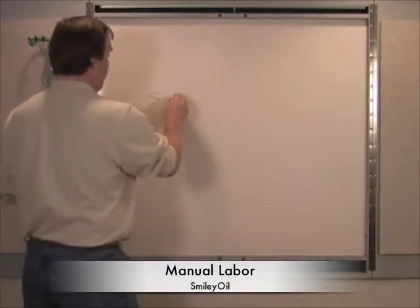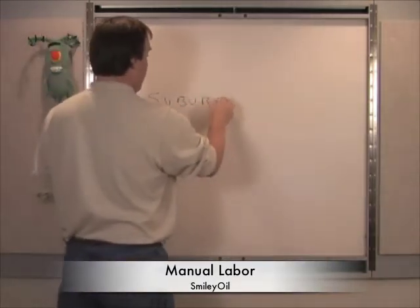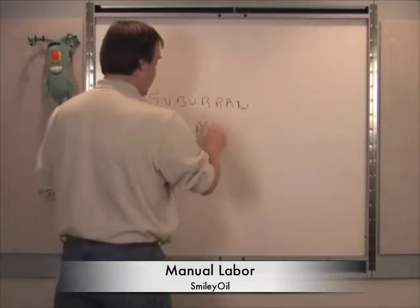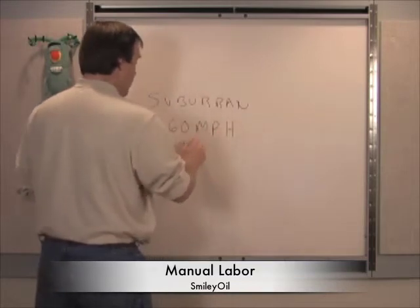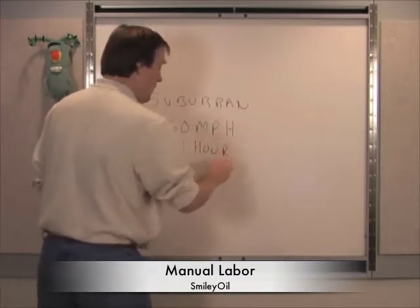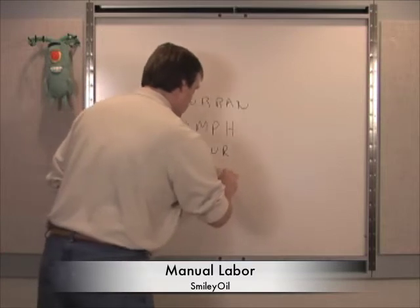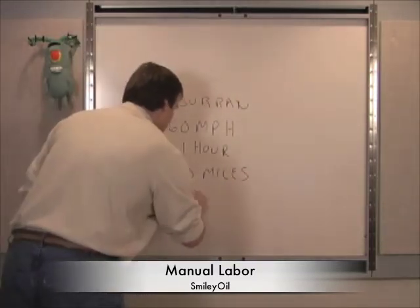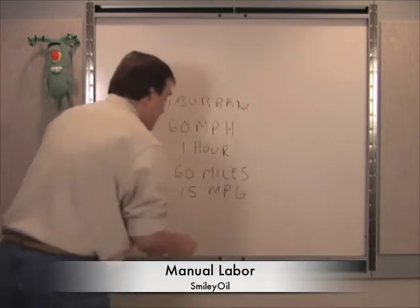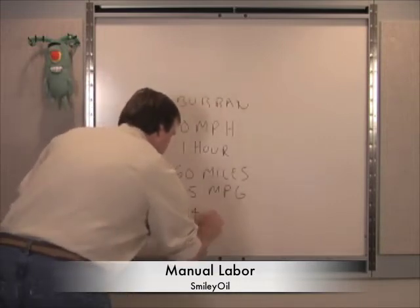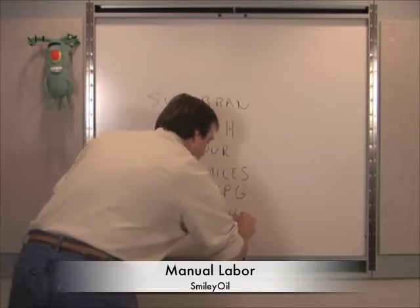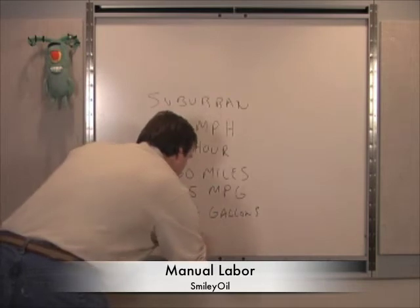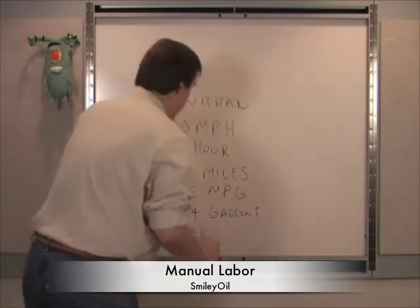Now let's take a Suburban going 60 miles per hour for one hour — that's 60 miles. Let's assume the Suburban gets 15 miles per gallon, which means it burns four gallons. And let's assume gas is four dollars a gallon, so we burn 16 dollars to go 60 miles in one hour.